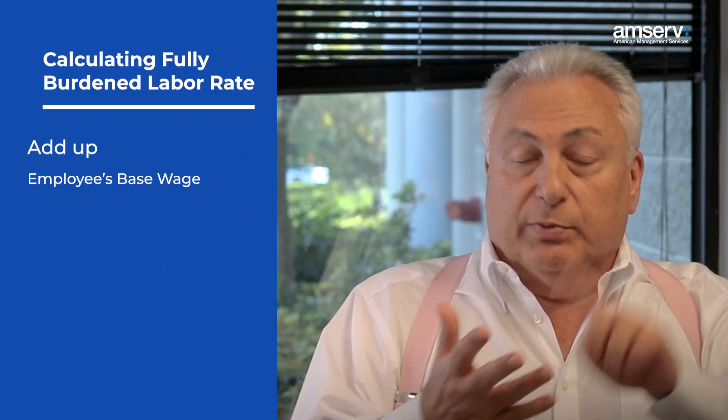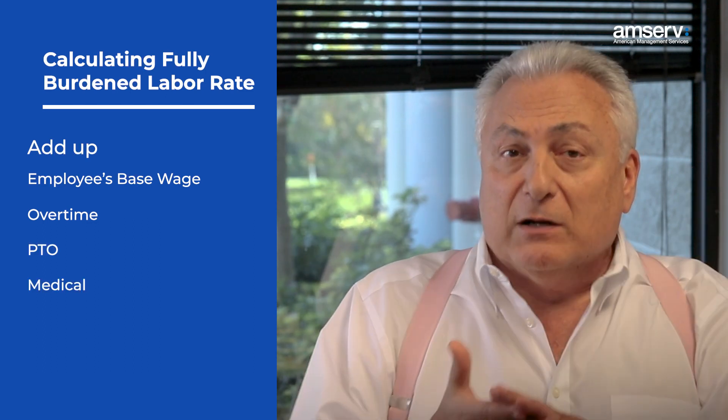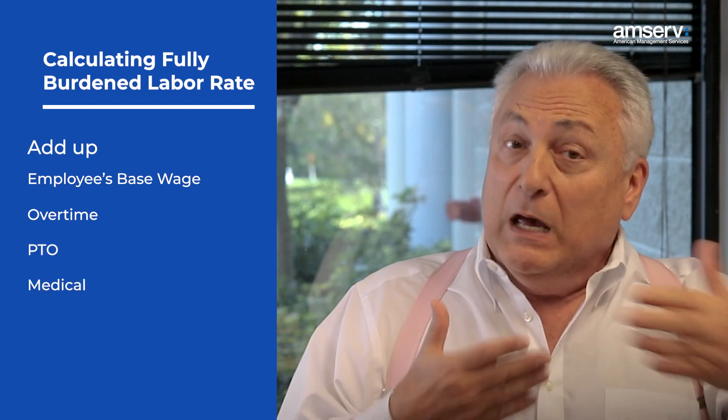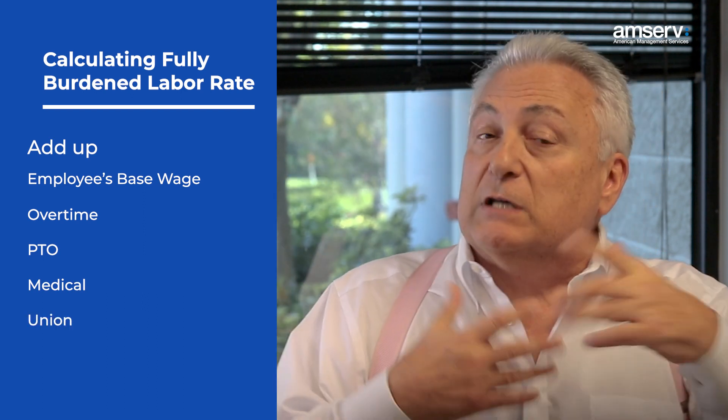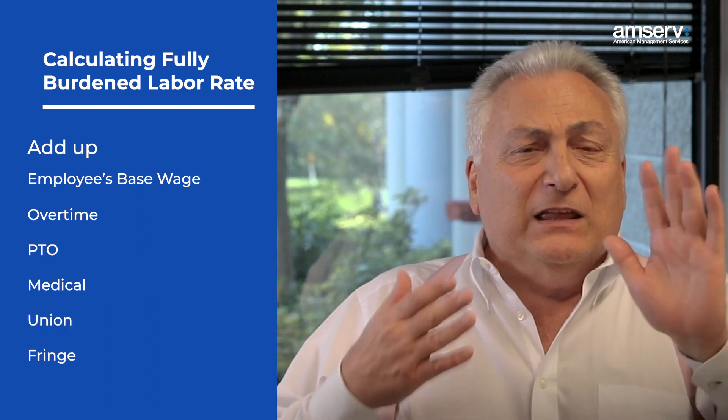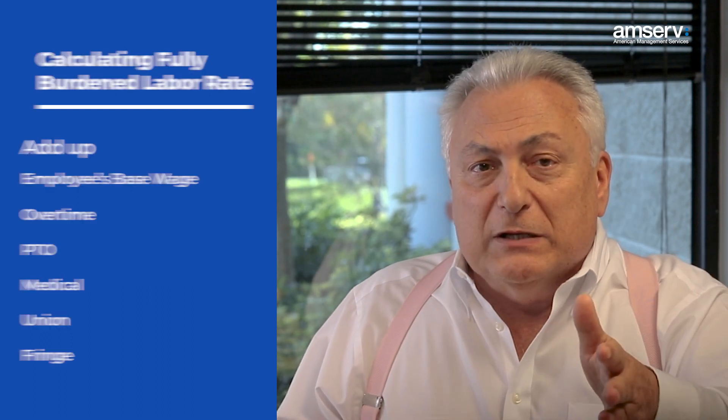On average, it costs $40.23 an hour to employ a non-government, non-union worker. How do you calculate your true labor costs? Because this is really integral in how you determine your pricing. You want to include your employees' base wage per hour, plus any overtime, plus PTO time, plus any medical insurances that you may pay on behalf of your employee, any union costs that you absorb, fringe benefits — anything else you do for your employees' benefit — to come to a true hourly rate.